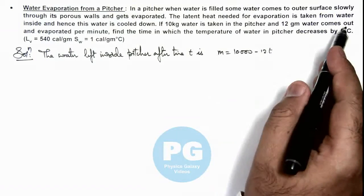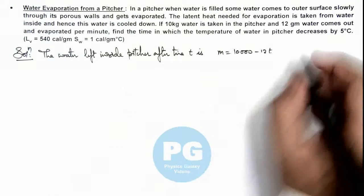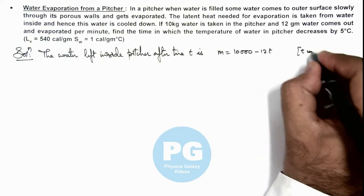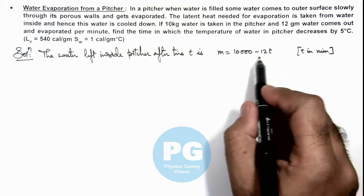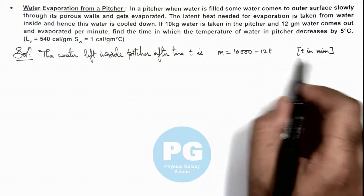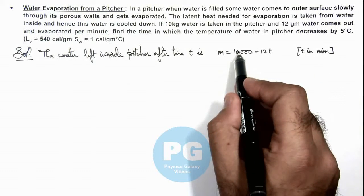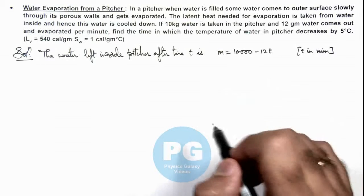As 12 gram water comes out per minute, so here I am taking t in minutes. So after time t minutes, 12t amount of water will get evaporated. So total amount of water left is 10,000 minus 12t.